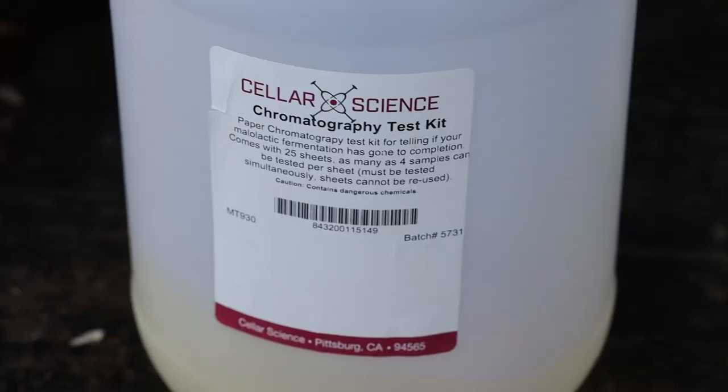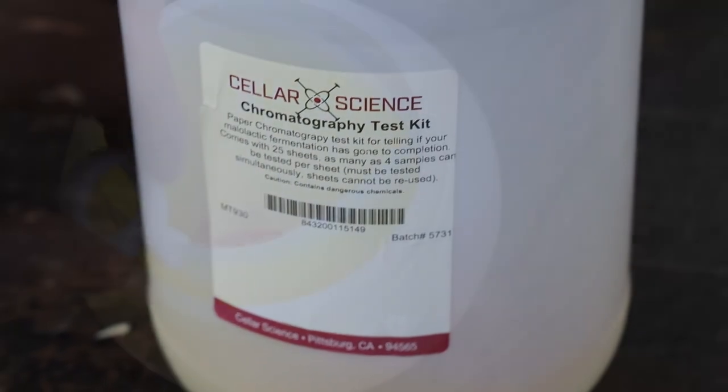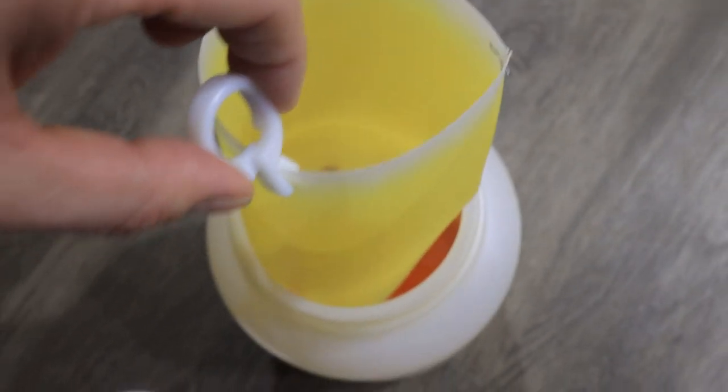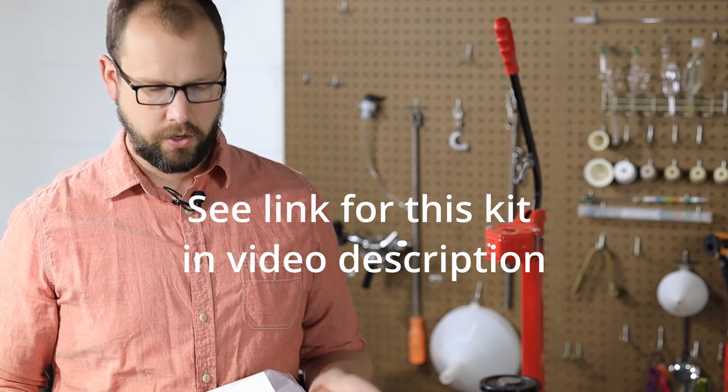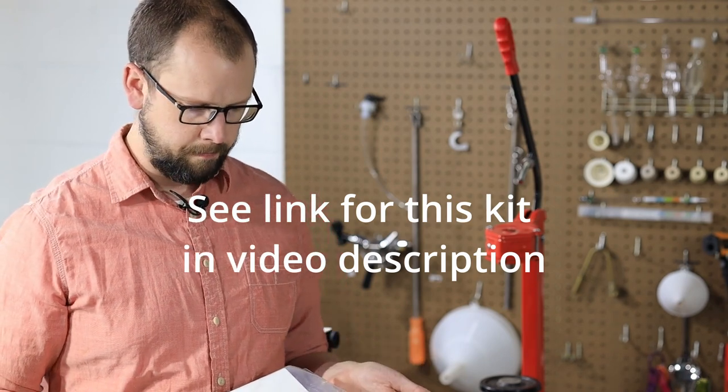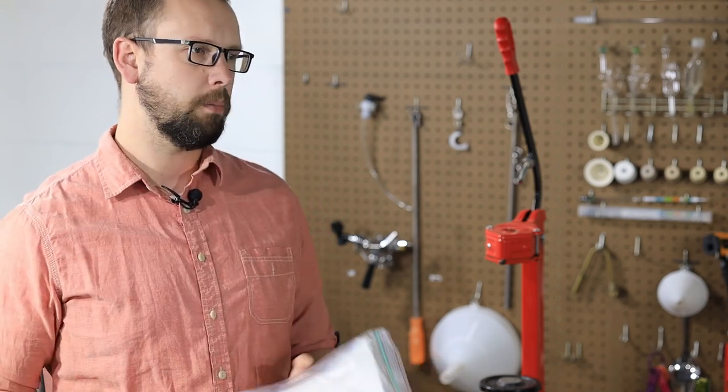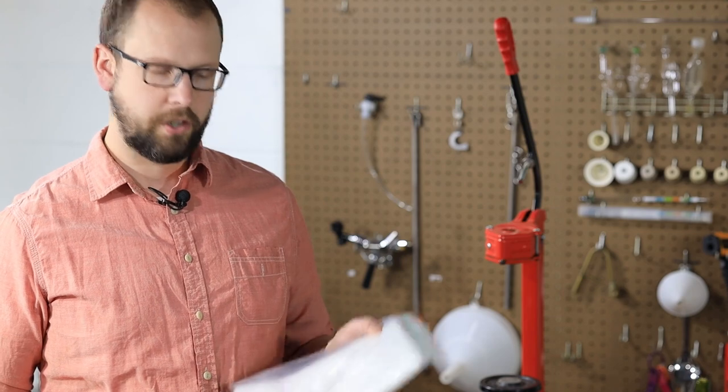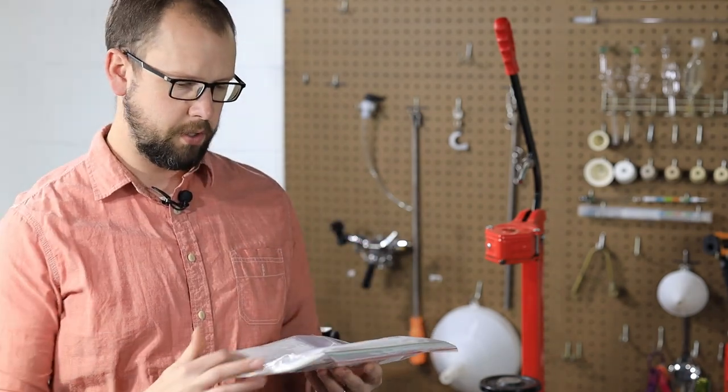My malolactic test setup is just the cellar science paper chromatography test that works pretty good. It's not cheap. It's about a hundred dollars, but you can do a lot of tests. You could probably do 125 tests with this kit, which is far more than you're probably going to do before you end up having to buy a little bit more solvent.